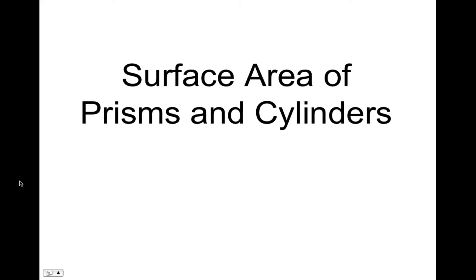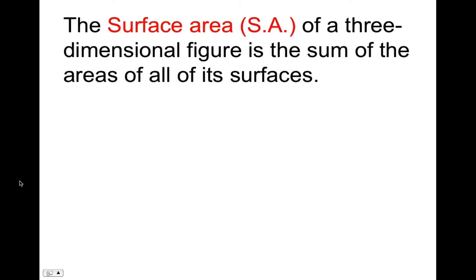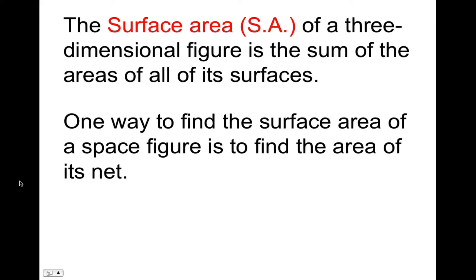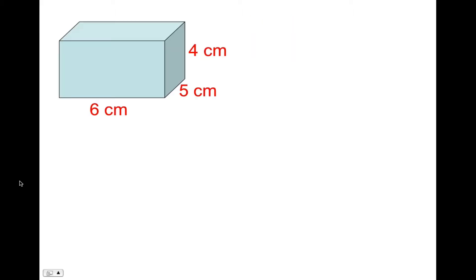Welcome. Today we're going to talk about surface area of prisms and cylinders. The surface area of a three-dimensional figure is the sum of the areas of all of its surfaces. One way to find the surface area of a space figure is to find the area of its net. Let's take a look at an example.